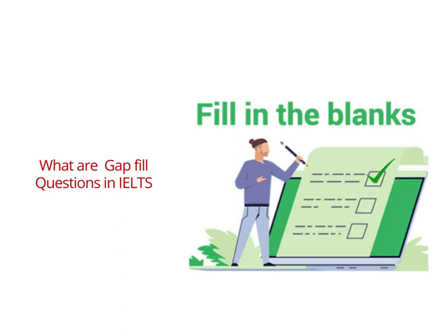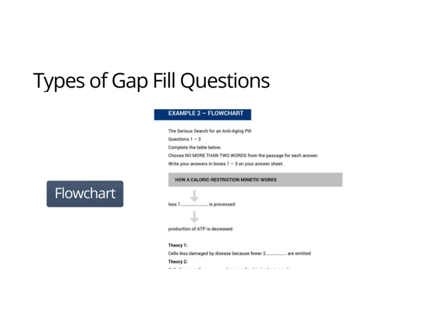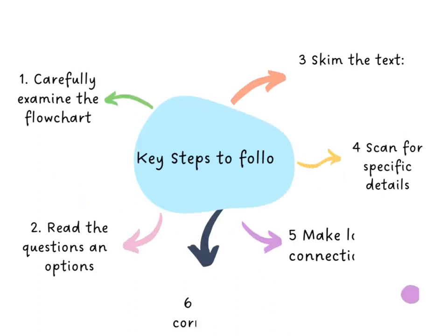One of the gap-fill question types is the flowchart kind of question. In IELTS reading sessions, a flowchart is a type of visual representation that may be used to assess your understanding of a process or sequence of events. Flowchart questions typically consist of a flowchart diagram that illustrates the steps or stages of a process with some information missing. Your task is to complete the missing information in the flowchart.